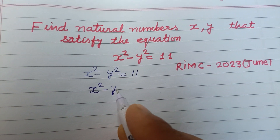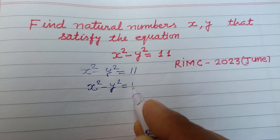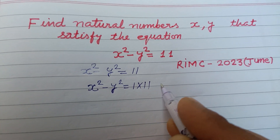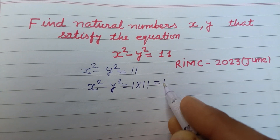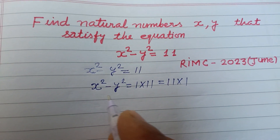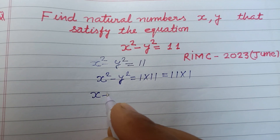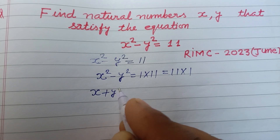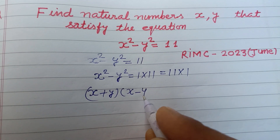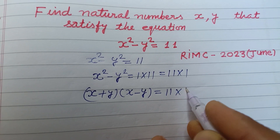11 is a prime number, so we break it as 1 into 11 or 11 into 1. So x squared minus y squared can be factored as x plus y into x minus y equal to 11 into 1.